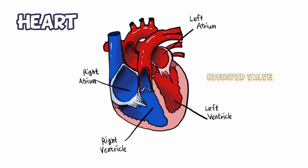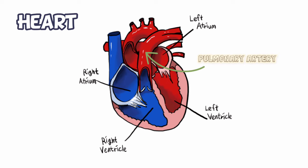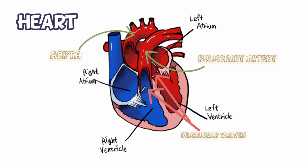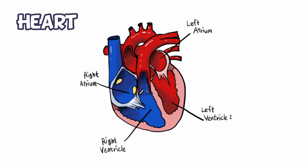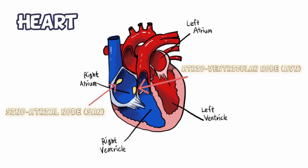The openings of the right and left ventricles into the pulmonary artery and aorta respectively are provided with semilunar valves. These valves get their name from the crescent moon shape of the flaps that make up the valve. The specialized cardiac musculature called the nodal tissue is also distributed in the heart. The patch present in the right upper corner of the right atrium is called the sinoatrial node (SAN), and the one in the lower left corner of the right atrium is called the atrioventricular node (AVN). The SAN is responsible for the rhythmic contractile activity of the heart.